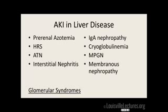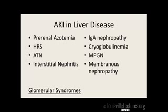Other differentials for someone with AKI and liver disease: hepatorenal, ATN, prerenal azotemia, interstitial nephritis from nephrotoxic agents, and glomerular disease. Liver disease can give you secondary IGA nephropathy. Cryoglobulinemia if you have hepatitis C. MPGN with any type of hepatitis, and membranous nephropathy in the setting of hepatitis can also give you AKI. Don't just jump to hepatorenal because somebody has decompensated liver failure with AKI.